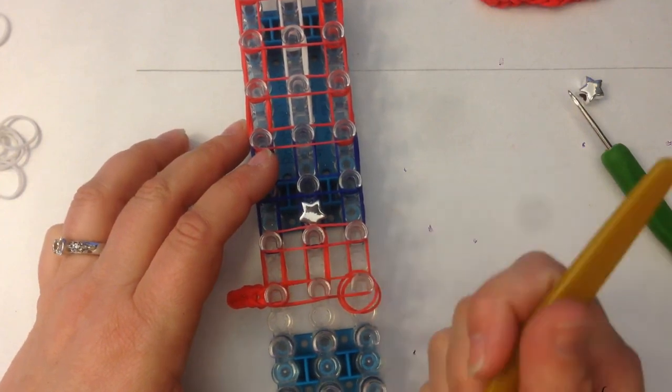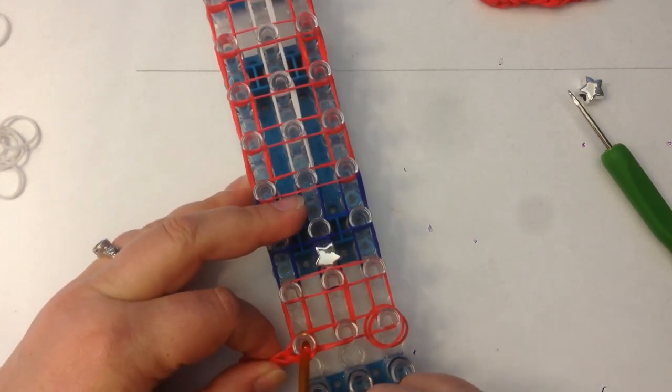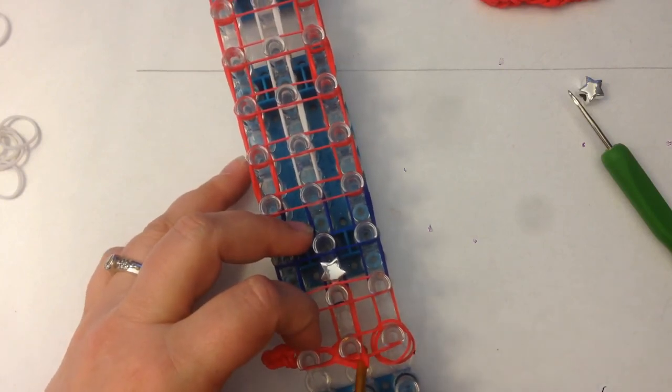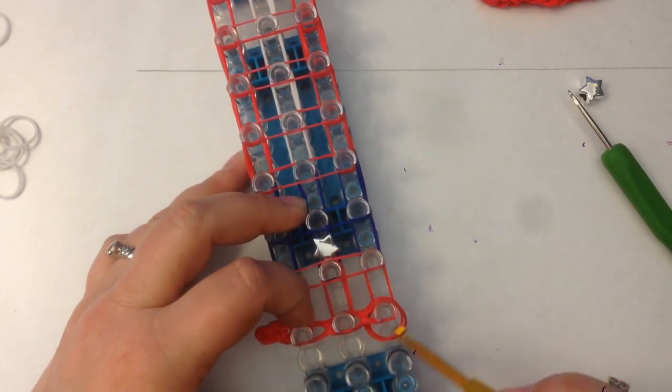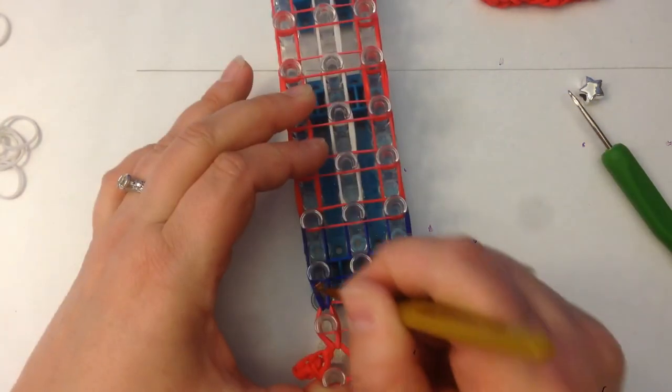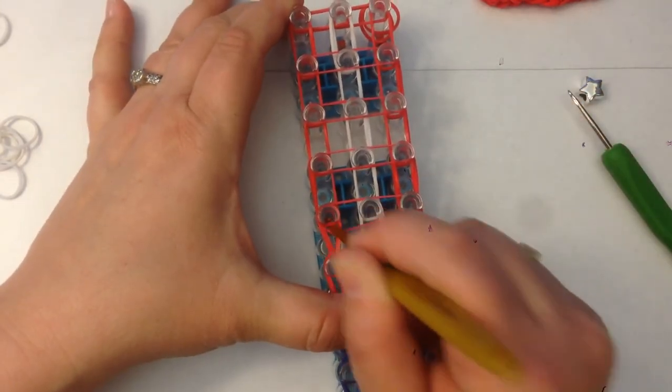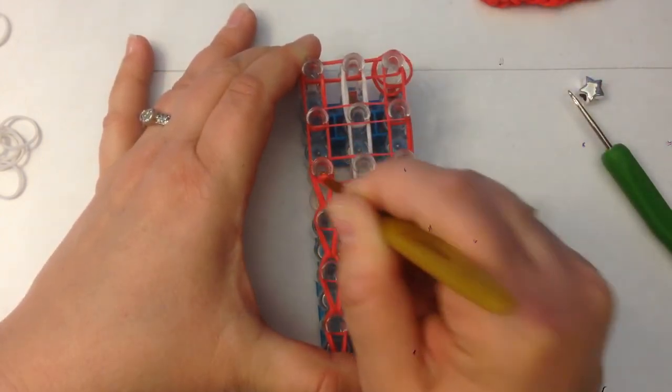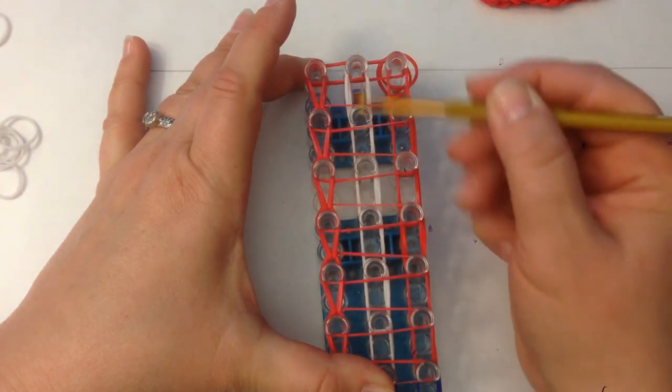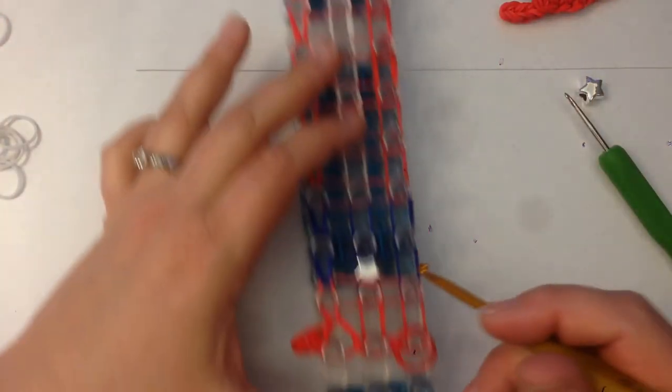We're ready to loom up column one and column two. Dig down and find this band here, the top two bands, and loom across to the side. Do the same for column number two and loom across to the side. Now we can loom up our columns. Push that crossover band back with the back of your hook. When you get to the top, we're going to loom this one first because otherwise your red band will be covered by the white.